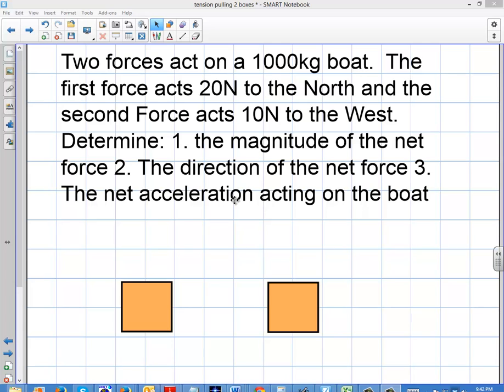So the problem reads: two forces act on a 1,000 kilogram boat. The first force acts 20 newtons to the north, and the second force acts 10 newtons to the west. Determine: number one, the magnitude of the net force; number two, the direction of the net force; and number three, the net acceleration acting on the boat.